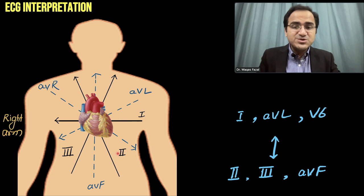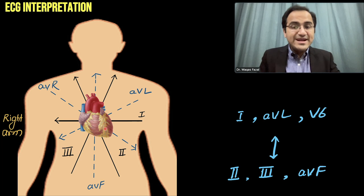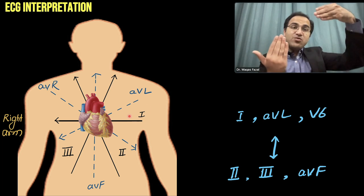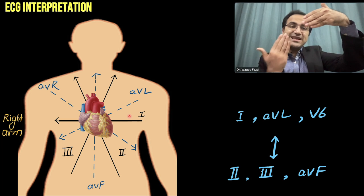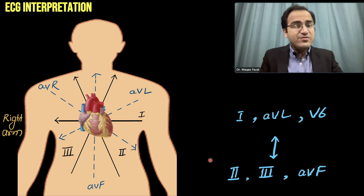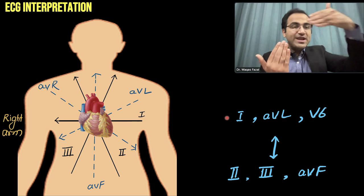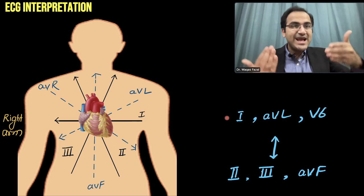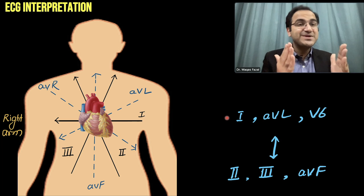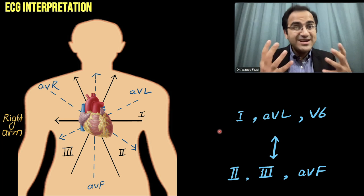As we said in our previous video, leads 2, 3, and AVF look at the inferior aspect of the heart, and leads 1, AVL, and V6 look at the lateral aspect of the heart. Whenever there is ST segment elevation in one set of leads, there will be ST segment depression in the other set. If there is ST segment elevation in leads 2, 3, AVF, you will see ST segment depression in leads 1, AVL, V6 — and that depression does not indicate sub-endocardial ischemia. It is called a reciprocal change.